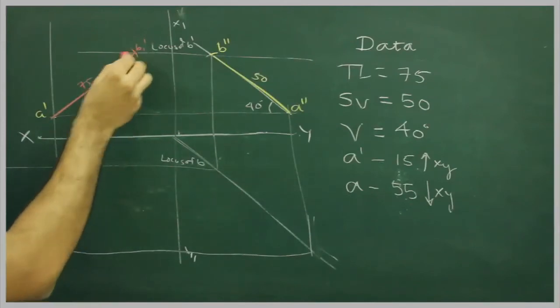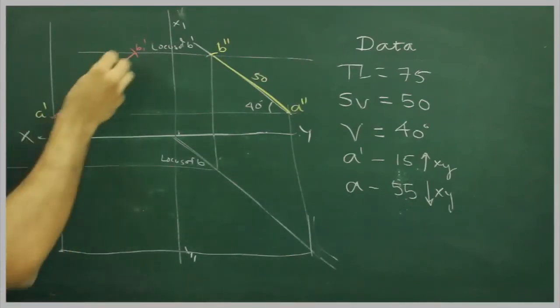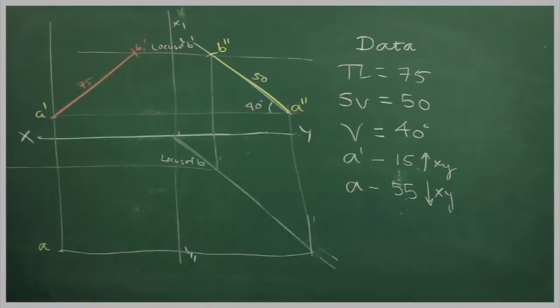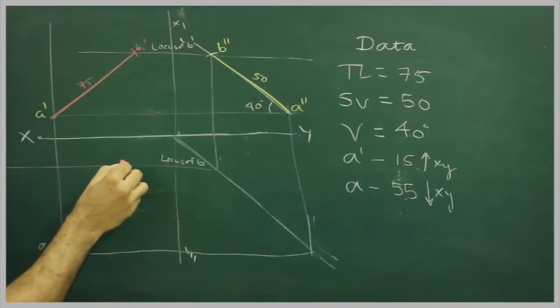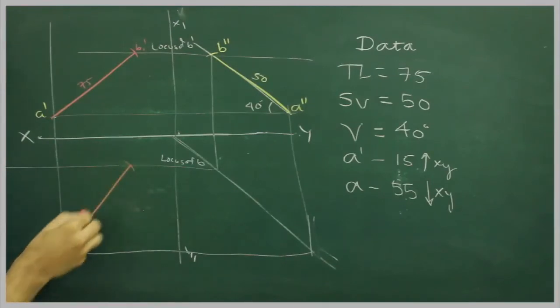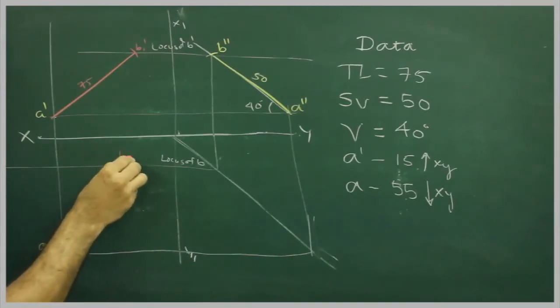Same way I can project B one dash, or first I will draw true length for top view also. So from here A, I will cut 75, so it will come somewhere here, that is B two.